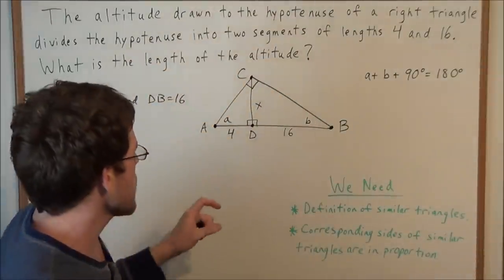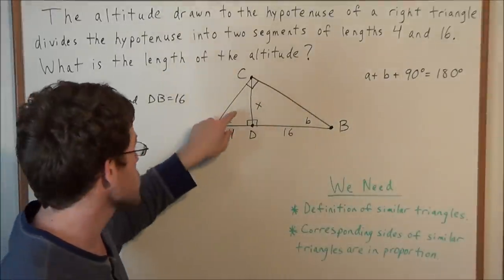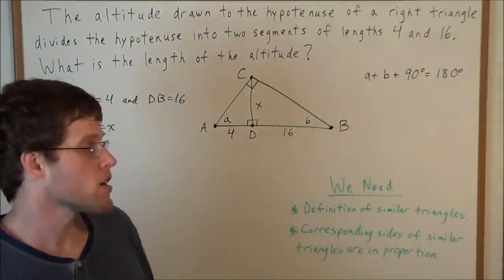So now, definition of similar triangles, we're going to need to set up or show that these two right triangles are similar. So how can we do that?